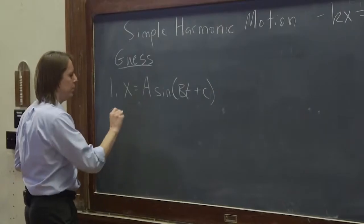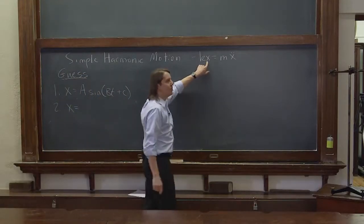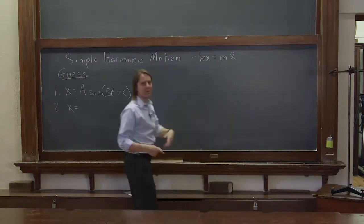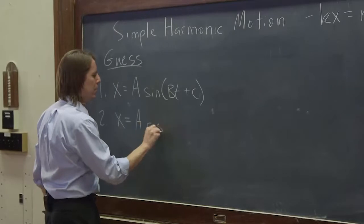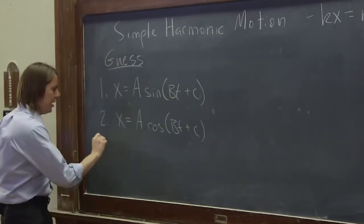Another one, two. If sine does it, then cosine also does it. If you have cosine here, derivative of cosine is negative sine, derivative of negative sine is negative cosine, so it gets back to cosine. So we could also write a cosine bt plus c.